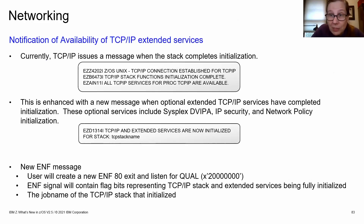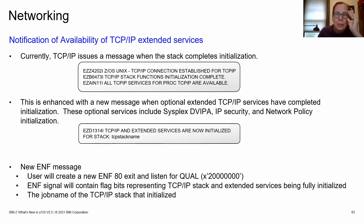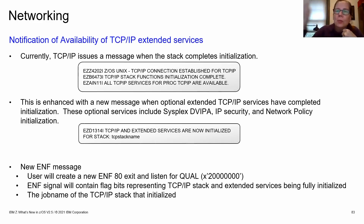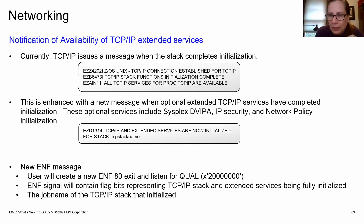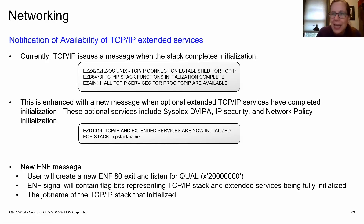A helpful small function: TCP/IP now issues an ENF event and a new message when it is completely initialized — including all extended services. Previously, dependent functions would automate on the earlier 'all TCP/IP services available' message, then find that extended services weren't fully up yet and have to wait and retry, causing delayed availability. Now, with this ENF and the new 'TCP/IP and extended services initialized' message for a specific stack, dependent functions start correctly the first time.